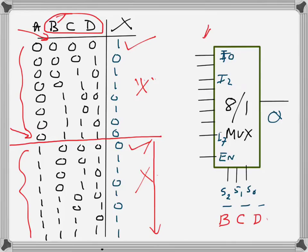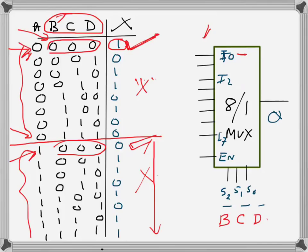When BCD is 000, input i0 goes to the output. Looking at the truth table for BCD=000: in the first part (A=0) the output is 1, and in the second part (A=1) the output is 0. So the output is the inverse of A. I will connect A-bar to i0 — when A=0 the output is 1, and when A=1 the output is 0.